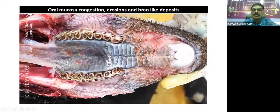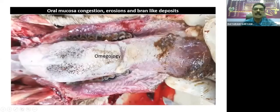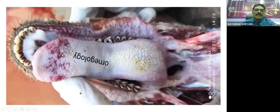We can see erosions. The papillae present on the hard palate are eroded because of necrotic changes. There is hemorrhage and congestion of the oral mucosa. The soft palate will show congestion and erosions. The small white masses are bran-like deposits present over the surface of the papillae on the hard palate. The dorsum of the tongue is completely occupied by bran-like deposits — entirely white. These are the typical classical lesions seen in PPR.